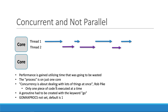To quote Rob Pike, concurrency is dealing with lots of things at the same time. So we're dealing with at least two different things at the same time, but we're not actually executing the code at the exact same time. If we have any downtime, we're going to go ahead and utilize this time on the other thread — if it ends up waiting on anything, we utilize that downtime on the other side. Being that we're only running this on one core, GOMAXPROCS is not set — the default is one, so we're running this all on one core.